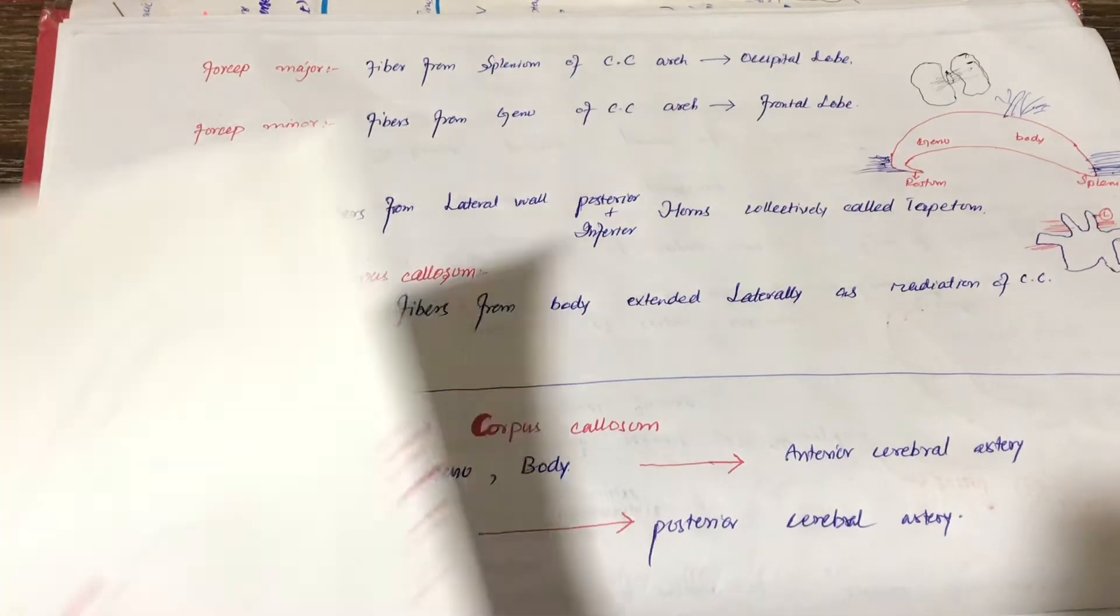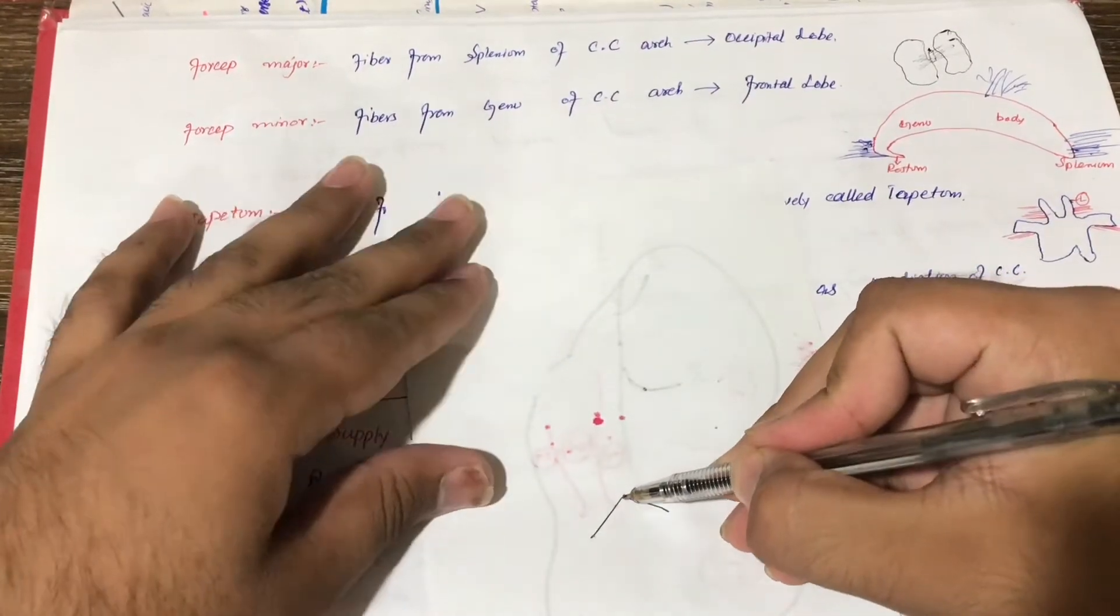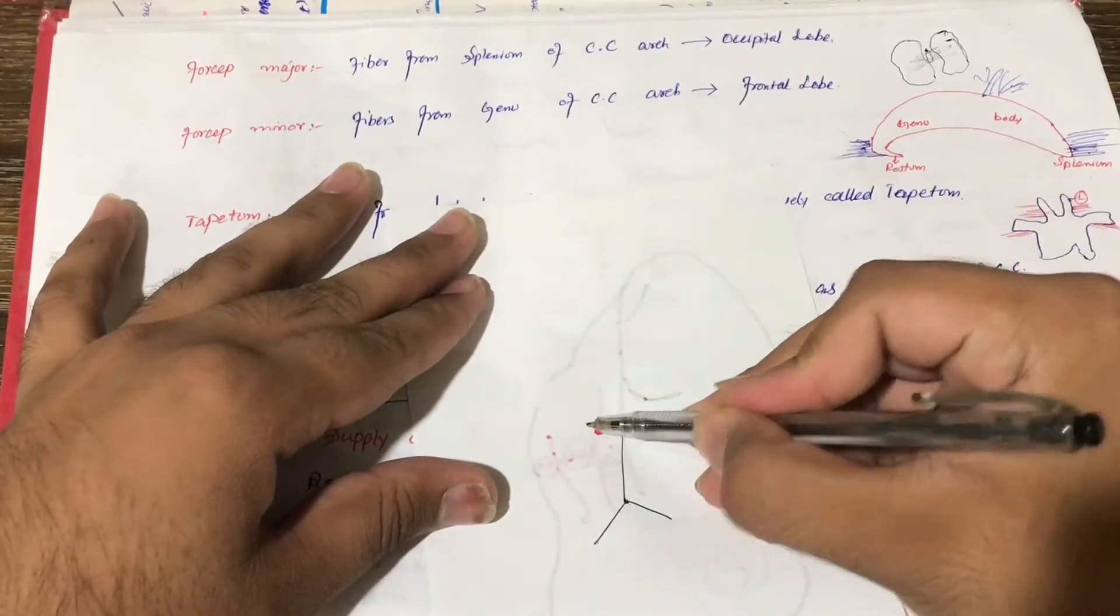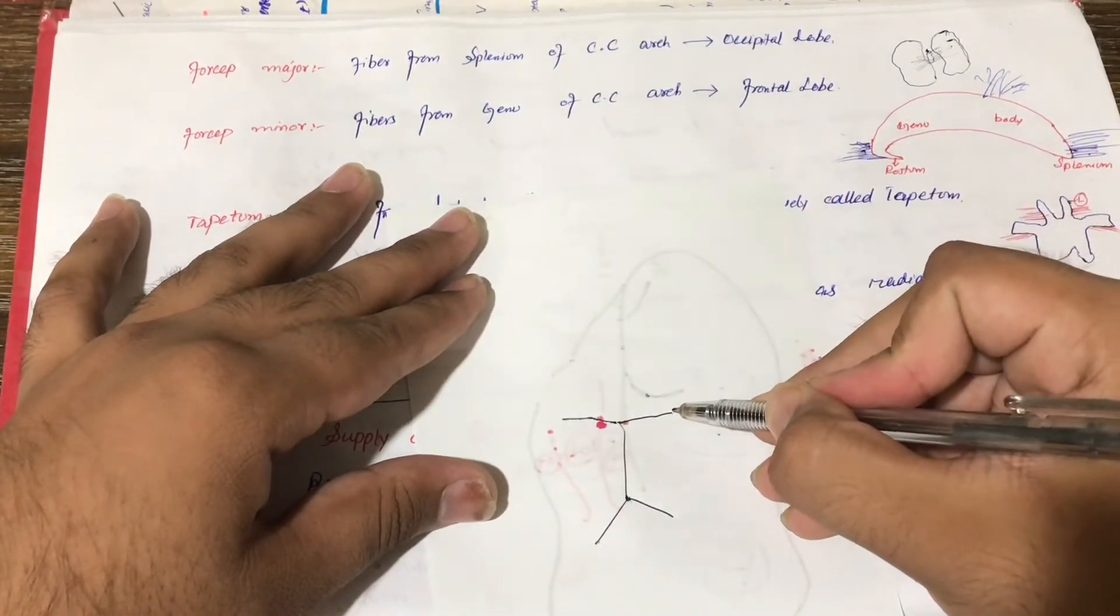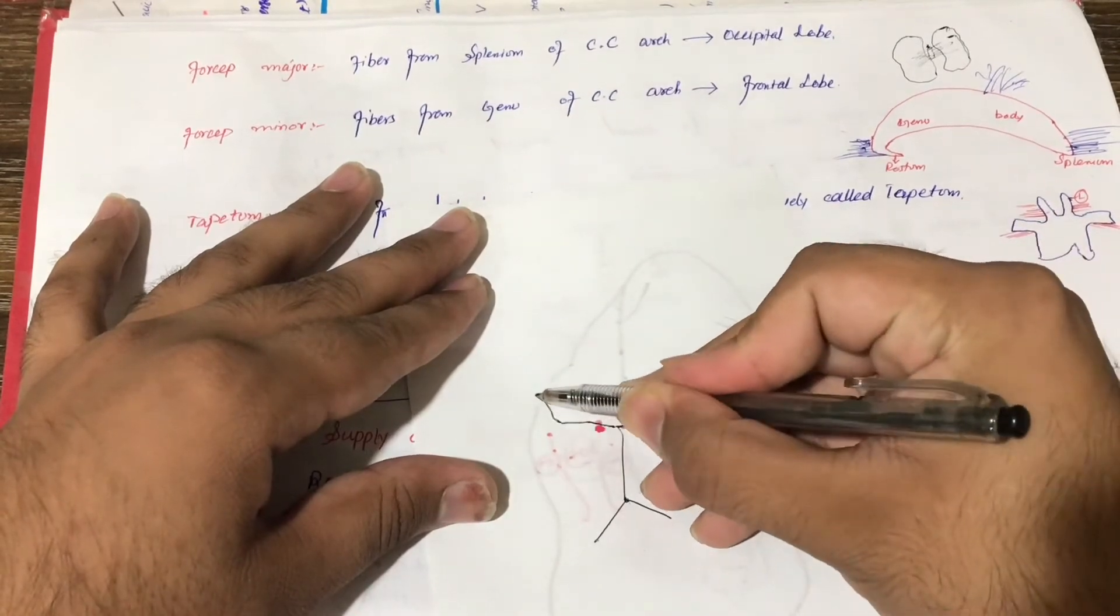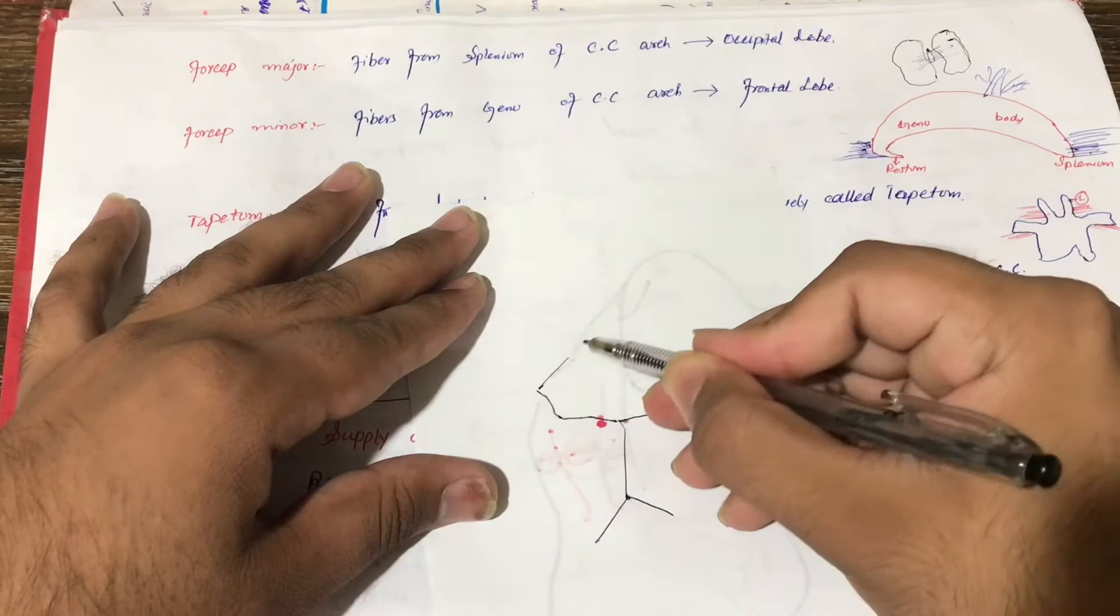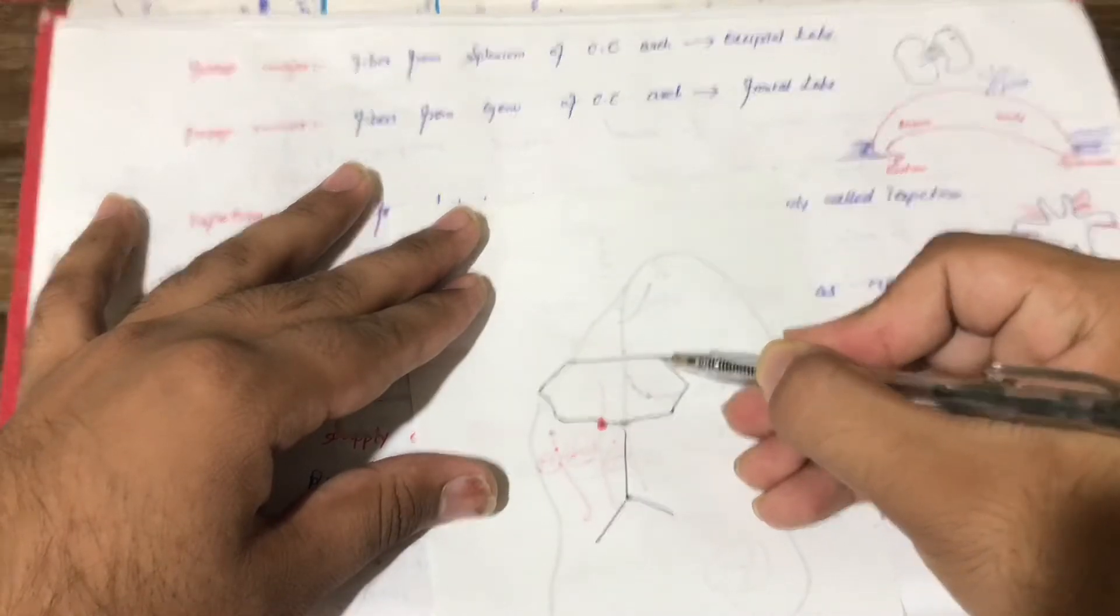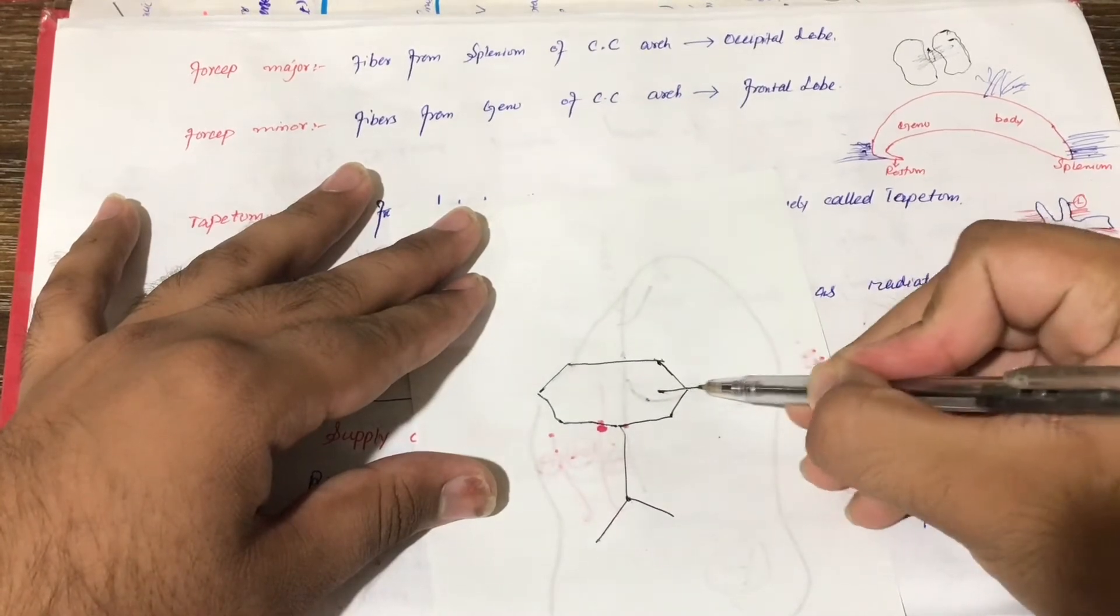If I show you a simple Circle of Willis, there are two vertebral arteries. They join to form the basilar artery. This gives the posterior cerebral artery. We have posterior communicating artery. This connects to the anterior cerebral artery with anterior communicating artery.